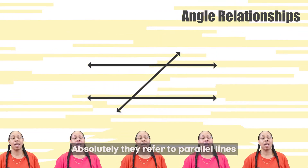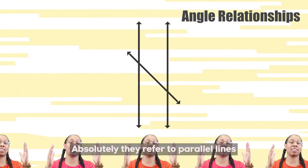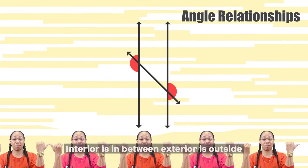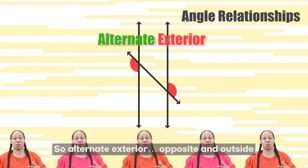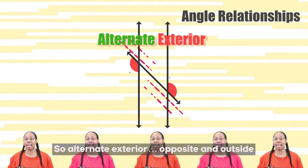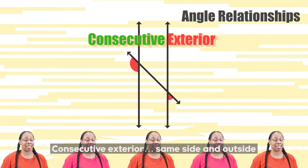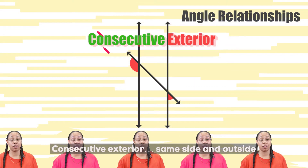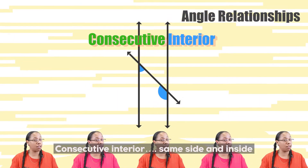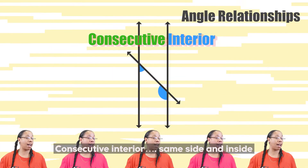Aren't those important? Absolutely, they refer to parallel lines. Interior is in between, exterior is outside. So alternate exterior: opposite and outside. Alternate interior: opposite and inside. Consecutive exterior: same side and outside. Consecutive interior: same side and inside.